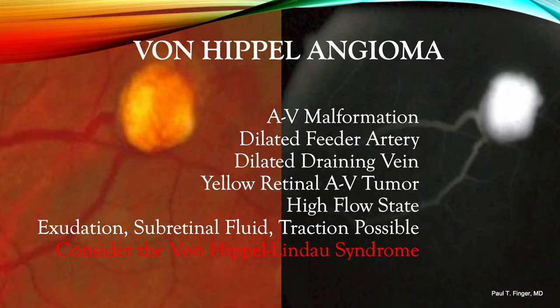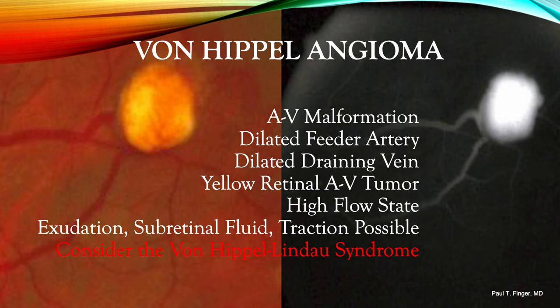Another and more common retinal vascular tumor is the von Hippel angioma. The underlying pathophysiology is one of an arteriovenous malformation. There should be a dilated feeder artery and a dilated draining vein, both best seen in the early phases of the fluorescein angiogram. This anomalous high-flow retinal vasculature comes together and forms a yellow retinal tumor, which can lead to exudation, subretinal fluid, or retinal detachment with retinal traction. Patients with von Hippel angiomas may have von Hippel-Lindau syndrome, associated with multiple endocrine neoplasia including pheochromocytomas, pancreatic cysts, renal cysts, renal cell carcinoma, and cerebellar angiomatosis. These patients should be managed with a neurologist.